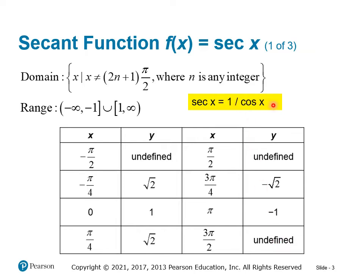Since we're looking at the reciprocal, when cosine is 1, secant will also be 1. And when cosine is negative 1, secant will also be negative 1. That happens at 0 and π, or 0 and 180 degrees. We've got some interim values as well, which are just the reciprocal values — all at 45-degree angles or reference angles in different quadrants for 45-degree angles.